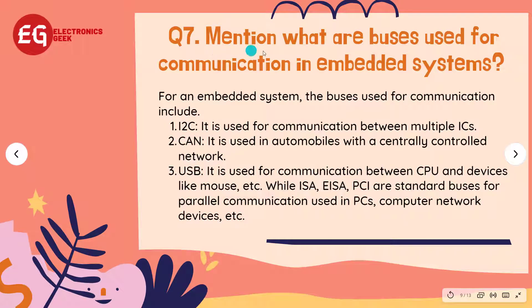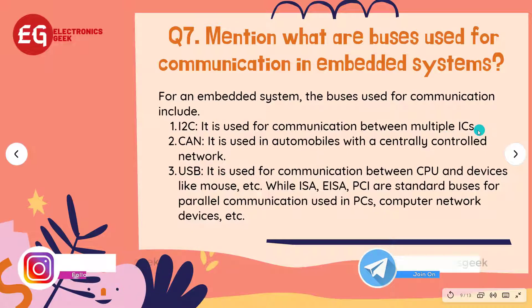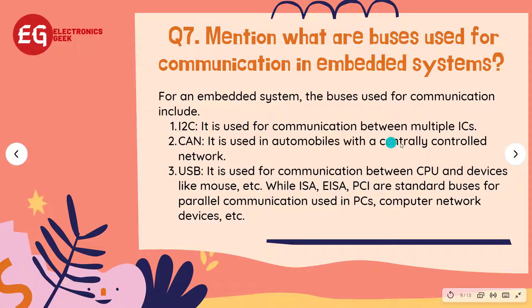Question 7: Mention what buses are used for communication in embedded systems? Answer: The buses used for communication in embedded systems include: 1. I2C — used for communication between multiple ICs; 2. CAN — used in automobiles with a centrally controlled network; 3. USB — used for communication between CPU and devices like a mouse, etc. ISA and PCI are standard buses for parallel communication used in PCs, computer network devices, etc.